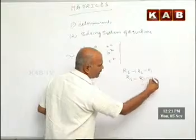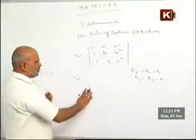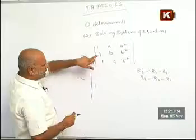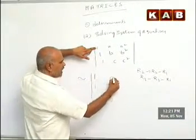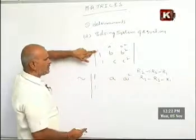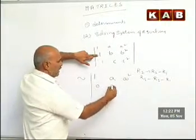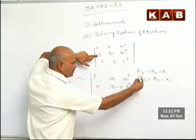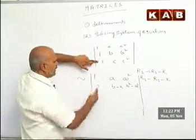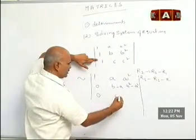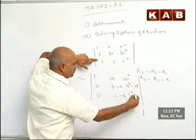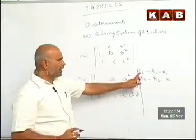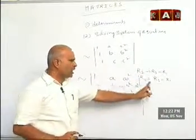We are doing R2 minus R1 and R3 minus R1. I applied this property. The changes will occur here. See R2, this is R2 minus R1. So first row is as it is. This one is 1 minus 1, which is 0. Again B minus A. Again B square minus A square. Again 1 minus 1, which is 0. Again C minus A. Again C square minus A square. So this is the value after applying these operations. R2 goes to R2 minus R1, R3 goes to R3 minus R1.